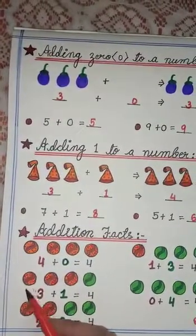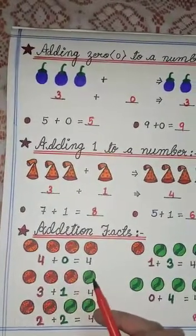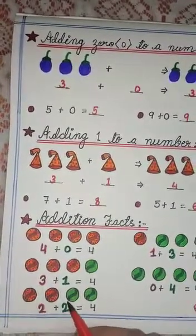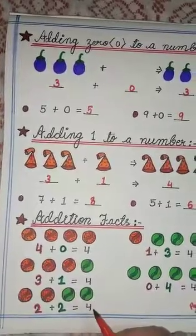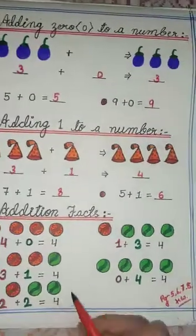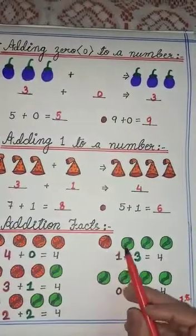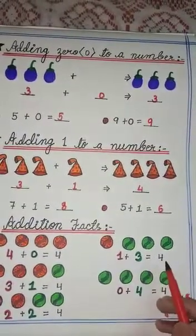Or you can take, if you take 3 red balls and 1 green ball, then also you will have 4 balls in total. You can take 2 red balls and 2 green balls and you will have a total of 4 balls. Same way, if you take 1 red ball and 3 green balls, then also you will have 4 balls.